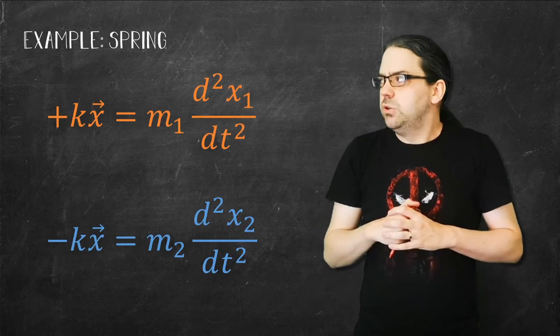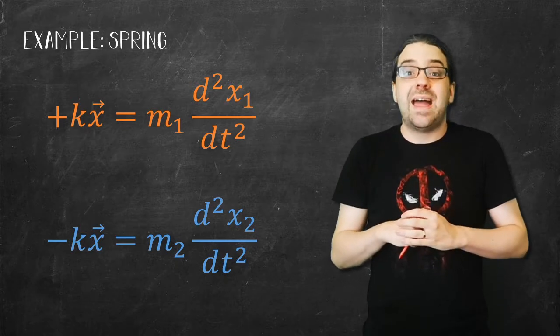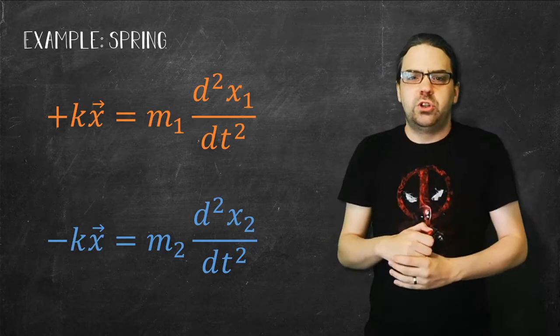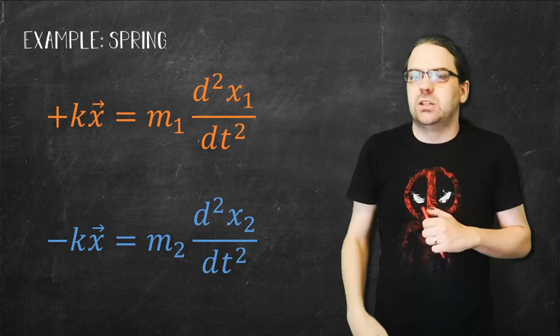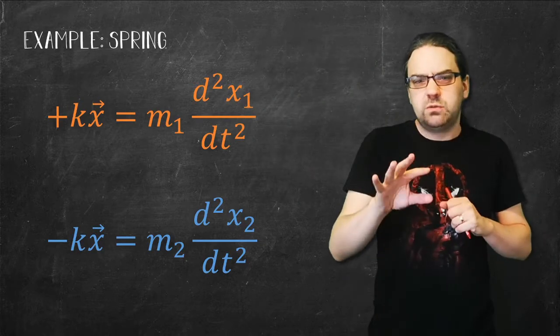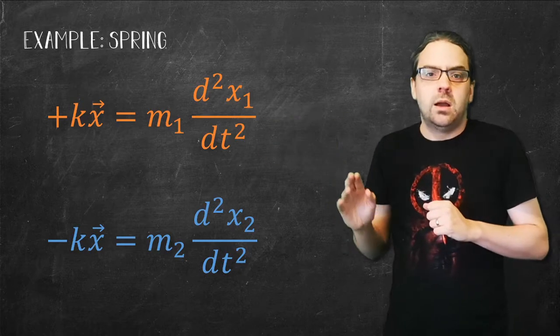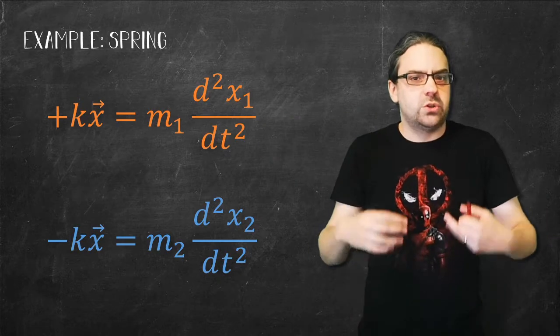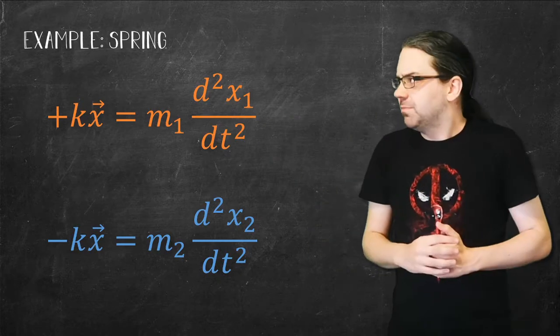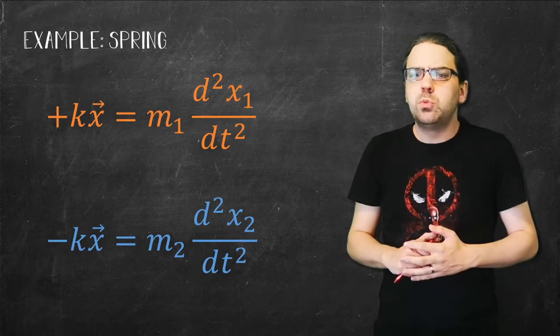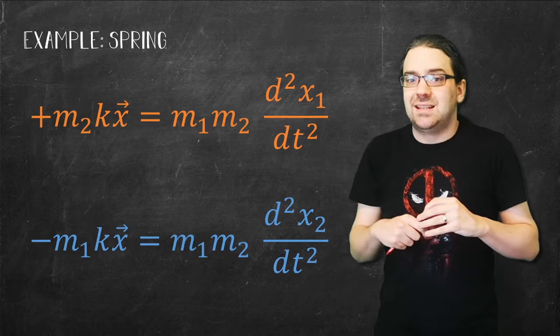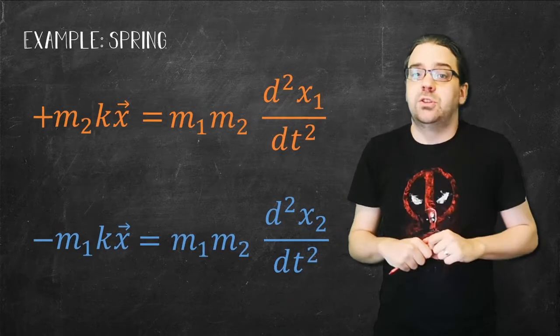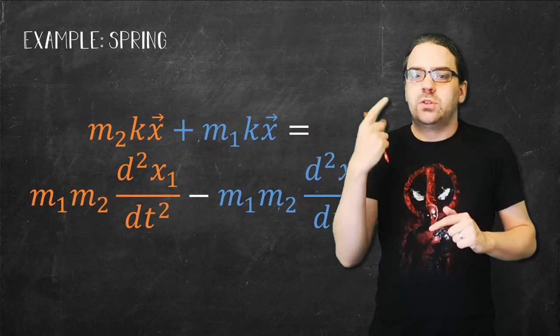Now we've got two simultaneous equations. They're happening at once, so we should be able to combine them, but not immediately because we can't get anything useful just by equating them. That just tells us the forces are equal but opposite again. So first we'll multiply each one by the opposite equations mass, and then we'll subtract the two, get them into one same equation.